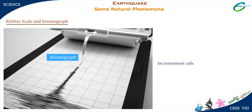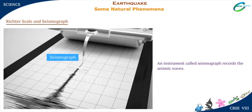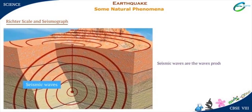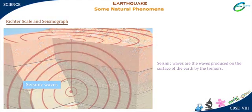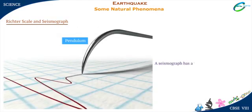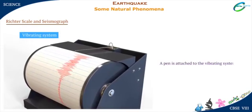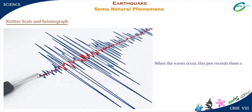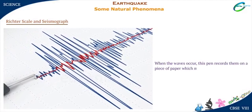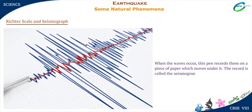An instrument called a seismograph records the seismic waves. Seismic waves are the waves produced on the surface of the earth by the tremors. A seismograph has a vibrating rod or a pendulum, and a pen is attached to the vibrating system. When the waves occur, this pen records them on a piece of paper which moves under it.